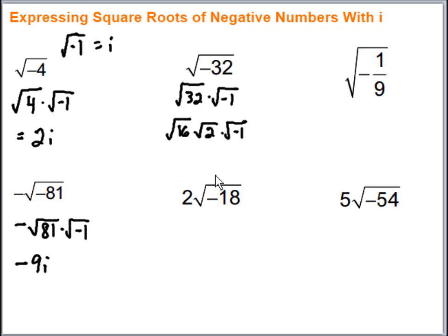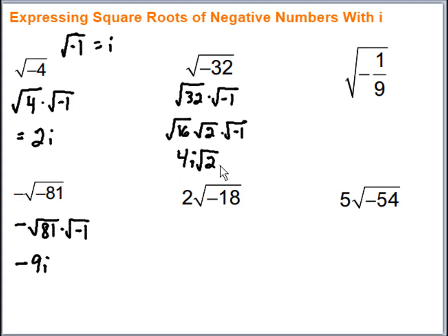Now I can simplify those pieces. The square root of 16 is 4, and I pull the i out front — that's the standard way to write it. If there's an i, you want to put it in front of the square root, giving us 4i√2. The reason we put i in front is so it doesn't accidentally appear to be under the square root sign. Remember, i is the square root of negative 1.